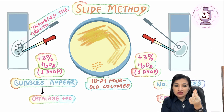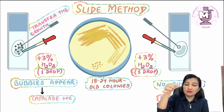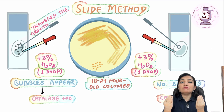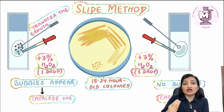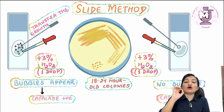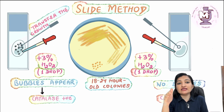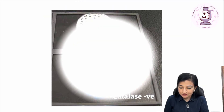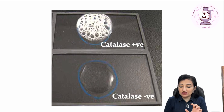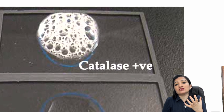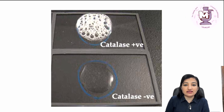Do not mix the growth with the 3% H2O2 you are adding — simply drop one drop and look for bubbles. The bubbles appear immediately. If bubbles appear late, say after 20 to 30 seconds, we do not call it a positive catalase test, because certain organisms have enzymes other than catalase that can also break down H2O2. Late appearance of bubbles is not considered a positive test. This is how the actual test looks: bubbles appear in a positive slide catalase test, while the negative test shows no bubbles.